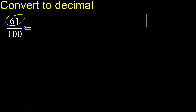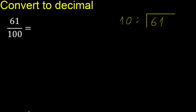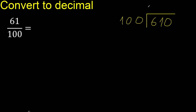61 divided by 100. 61 is less, therefore complete — always complete with 0. Here, 0 point.